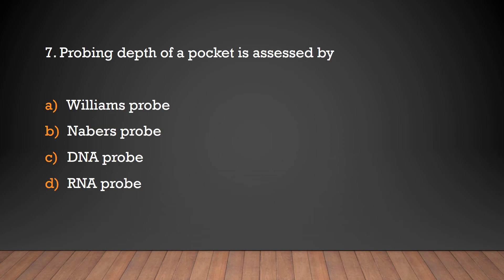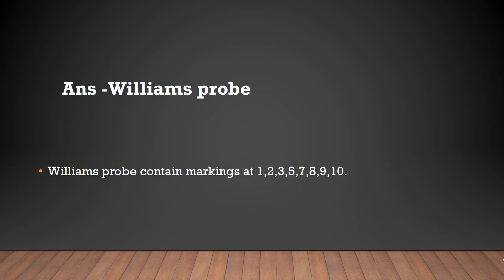Question 6: Probing depth of a pocket is assessed by Williams Probe, Nabers Probe, DNA Probe, or RNA Probe? Answer: Williams Probe. Williams Probe contains markings at 1, 2, 3, 5, 7, 8, 9, and 10 mm.